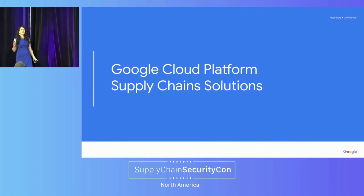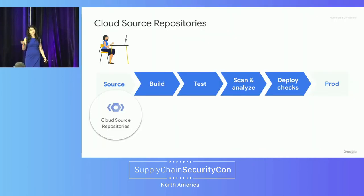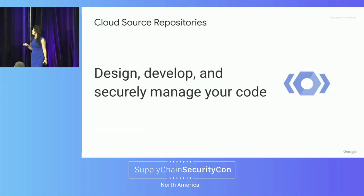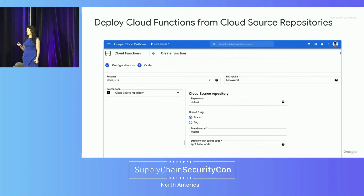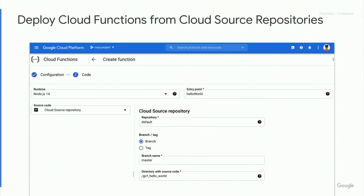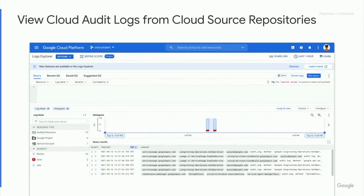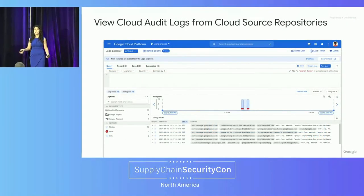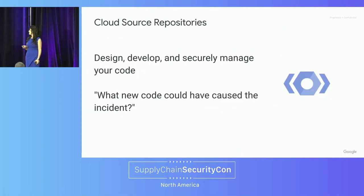Let's talk about some of the existing solutions on Google Cloud. For source, we have Cloud Source Repositories, which allows you to design, develop, and securely manage your code. Here's an example — you can deploy a specific version of your code from Cloud Source Repositories using Cloud Functions, making sure you know which version you're deploying when you roll back to the version that was running okay last week. It also integrates with Cloud Audit Logs, so I can look at my error logs and try to see what piece of code and what line of code it's coming from, and see if this is new code or a new traffic shape triggering this page. The question this allows me to answer is: what new code could have caused this incident?